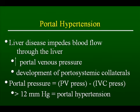The physiology of portal hypertension is such that liver disease impedes blood flow through the liver, which increases portal venous pressure. As a result, portal systemic collaterals will develop. By definition, when the portal pressure exceeds 12 millimeters of mercury, the patient is diagnosed with portal hypertension. Portal pressure is defined by the portal vein pressure minus the pressure in the inferior vena cava.